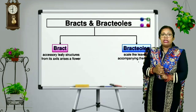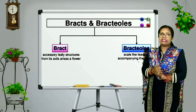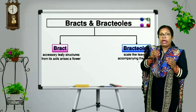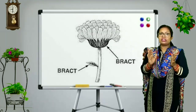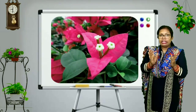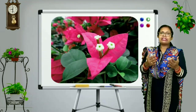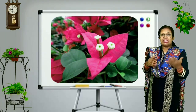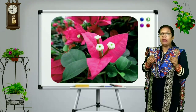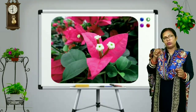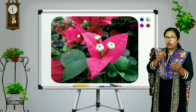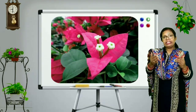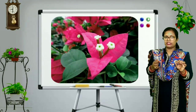Now we will study about bracts. Bracts are small leaf-like structures. Sometimes flowers are very small and arise from the axils of leaves. In such cases, the leaf-like structures become colourful and look like petals, causing confusion. A good example is bougainvillea, where the actual flowers are very small and the colourful leaf-like structures on the axis are the bracts.